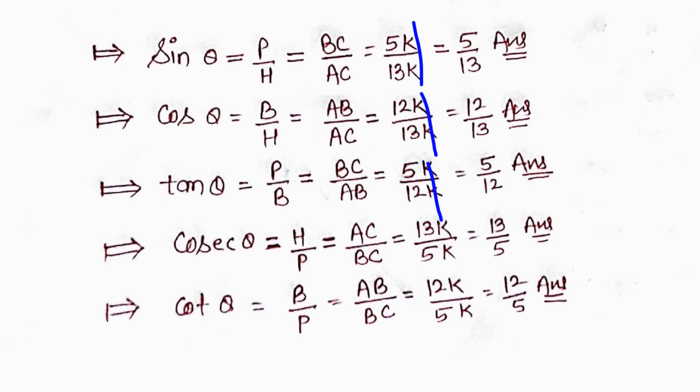tan θ = P/B = BC/AB = 5K/12K = 5/12. cosec θ = H/P = AC/BC = 13K/5K = 13/5. cot θ = B/P = AB/BC = 12K/5K = 12/5. These are the answers for all trigonometric ratios.